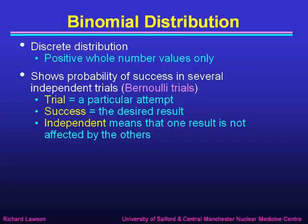The binomial distribution is a discrete distribution — the results can be positive whole number values only, like our histogram of bone scan values. It shows the probability of success in several independent trials, and these are called Bernoulli trials, after Jacob Bernoulli. In this context, a trial means a particular attempt, success is getting the desired result, and independent trials means that one result is not affected by the others.